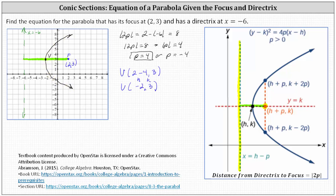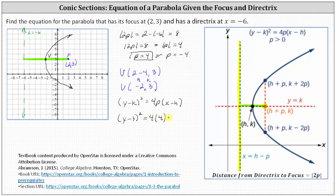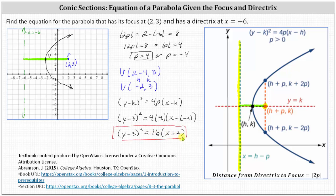Now let's find the equation, which we know is in the form: the square of y minus k equals 4p times the quantity x minus h. The square of y minus 3 equals 4 times 4, times the quantity x minus negative 2. Simplifying one last time, we have the square of y minus 3 is equal to 16 times the quantity x plus 2. I hope you found this helpful.